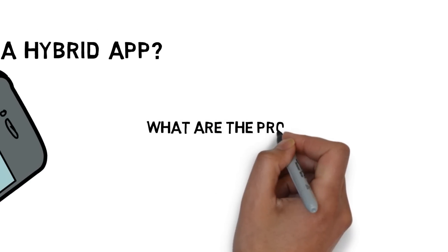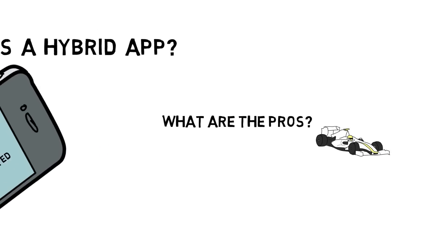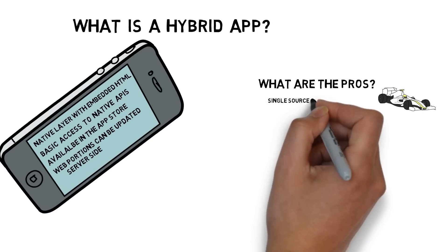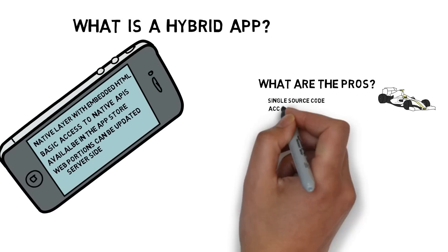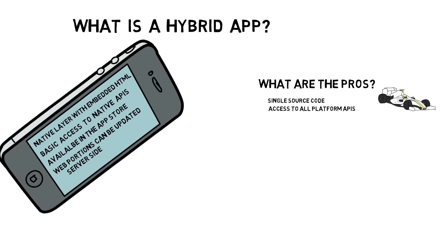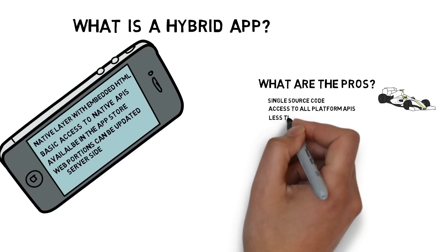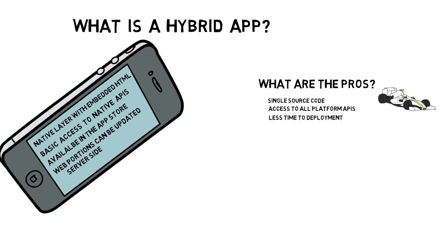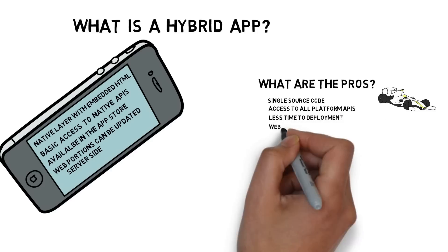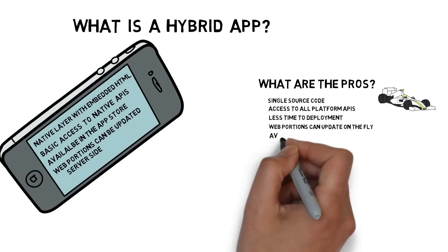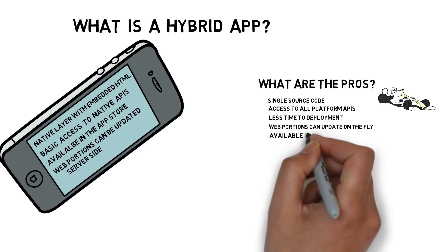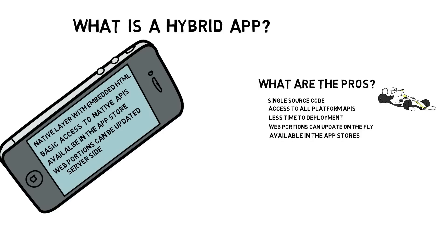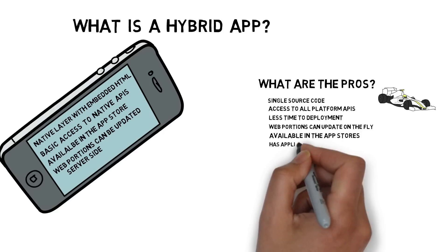What are the pros of a hybrid app? You have a single source code, access to all the platform APIs, it's less time to deployment, web portions can be updated on the fly, it's available in the app stores, and it has an application icon on the device.